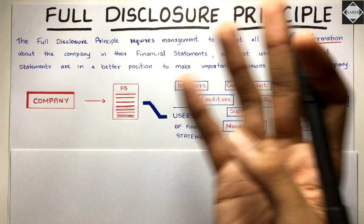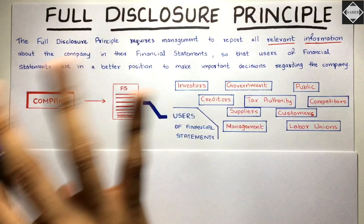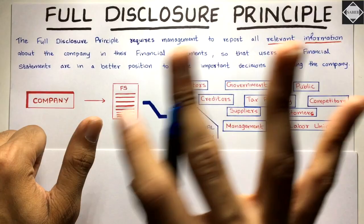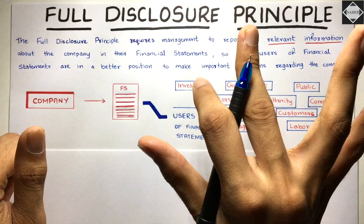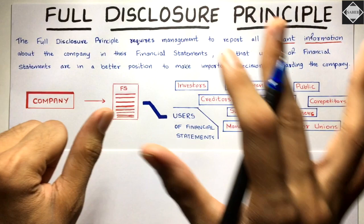Financial statements here doesn't only mean the statement of profit and loss, balance sheet, cash flow statement, and statement of changes in equity. It also includes notes to financial statements and any other explanatory material required in the country in which the company is operating. Everything — all four main statements, notes to financial statements, and any other required explanatory material.